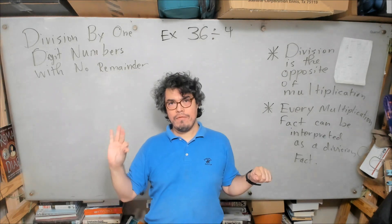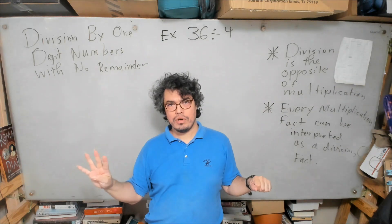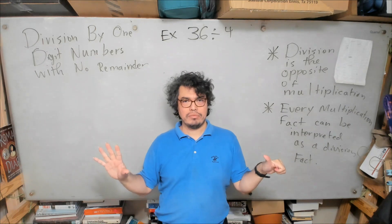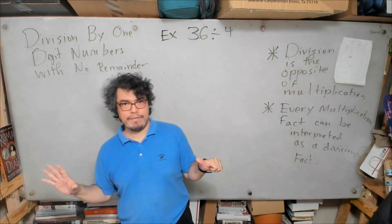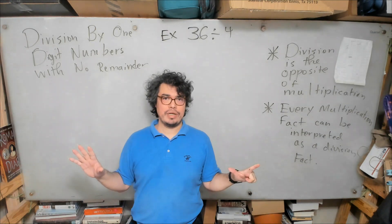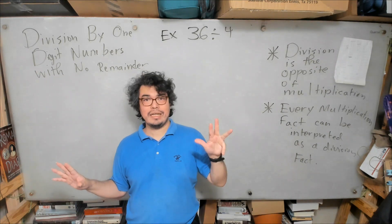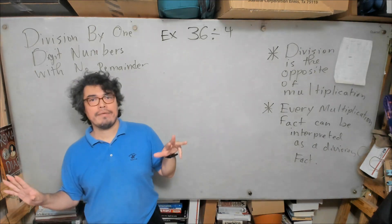4 times 3 is 12, 4 times 4 is 16, 4 times 5 is 20, 4 times 6 is 24, 4 times 7 is 28, 4 times 8 is 32, 4 times 9 is 36. And if you notice that 4 times 9 is 36, we now know the answer to this question.